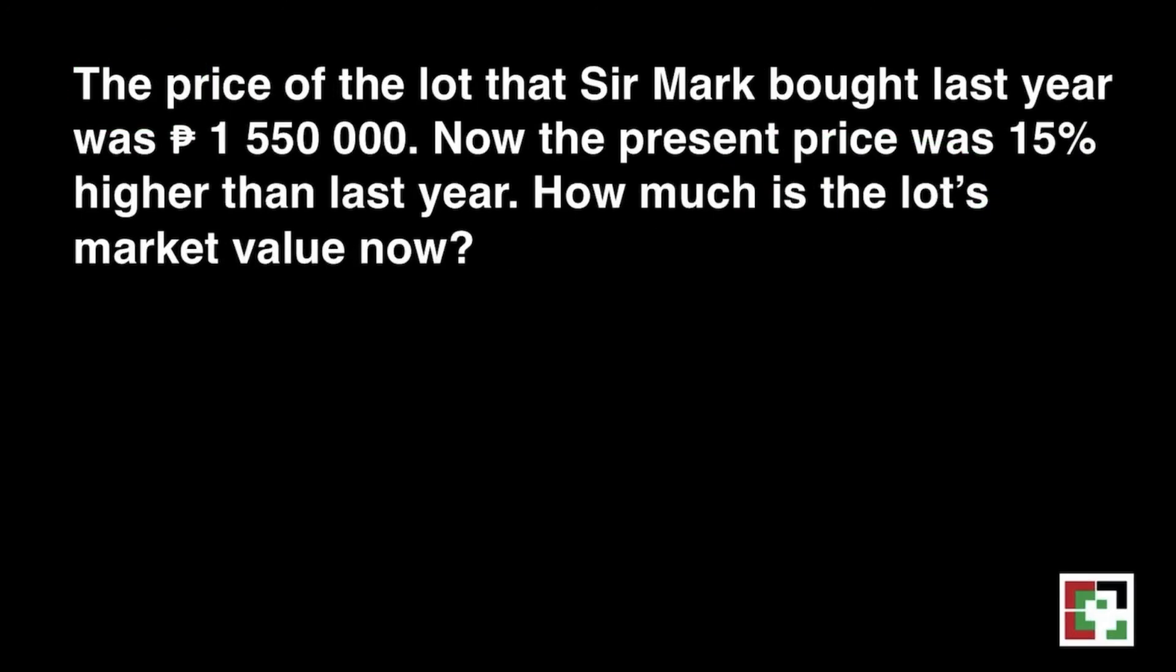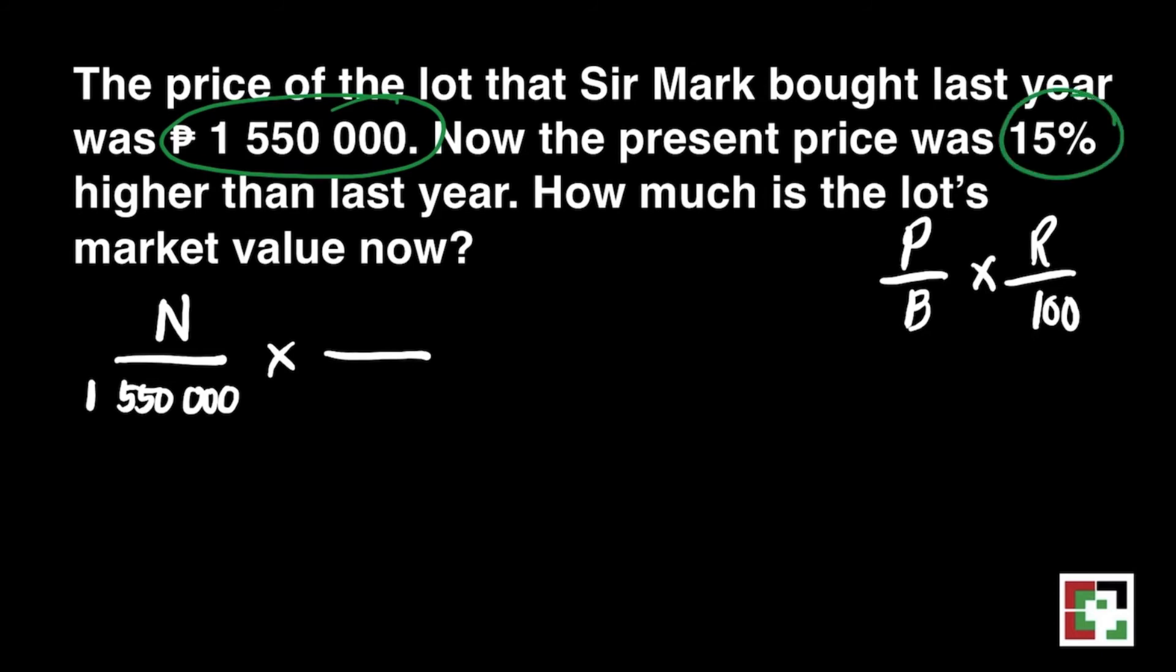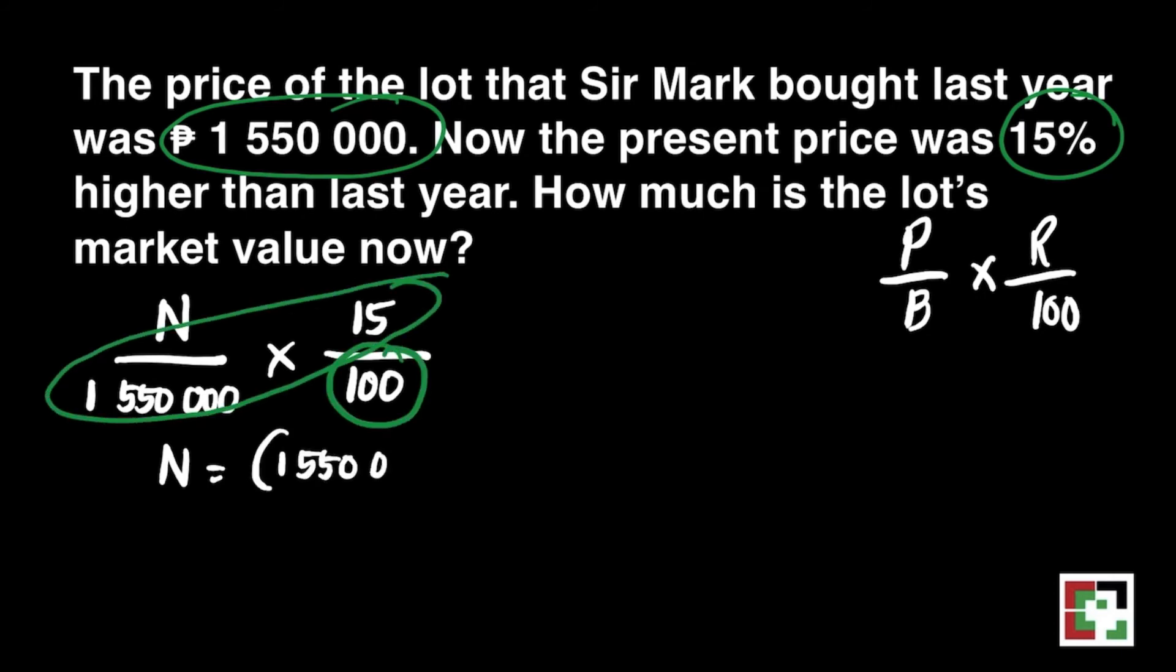Next question. The price of the lot that Sir Mark bought last year was 1,550,000 pesos. Now, the present price was 15% higher than last year. How much is the lot's market value now? We will still use the same formula and let's substitute n over 1,550,000 pesos times our rate which is 15% that's 15 over 100. And to get the value of n, just do cross multiplication.